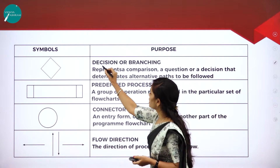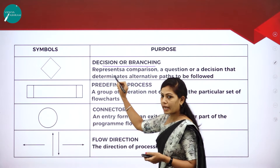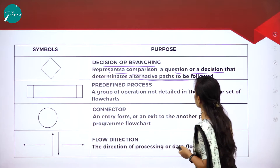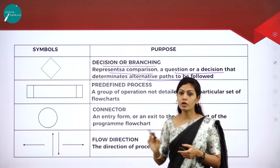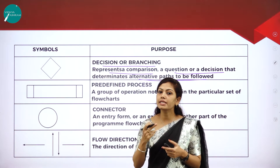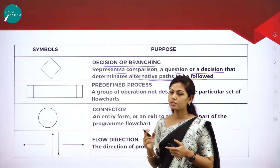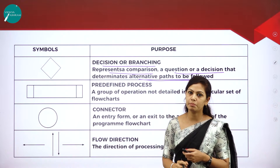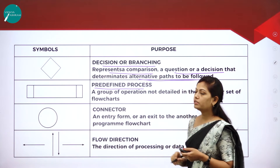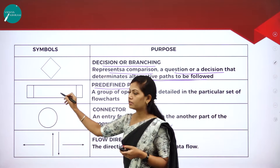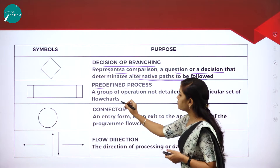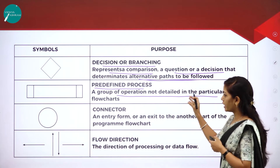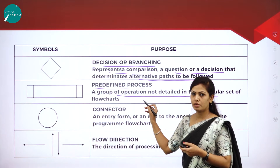The next important symbol is decision or branching, represented by a diamond shape. It represents a comparison, question, or decision that determines alternative paths to be followed. This symbol stands for decision statements in a program where the answer is usually yes or no, or true or false. The next symbol is the predefined process, which is a double rectangle — it represents a group of operations not detailed in the particular set of flowcharts.